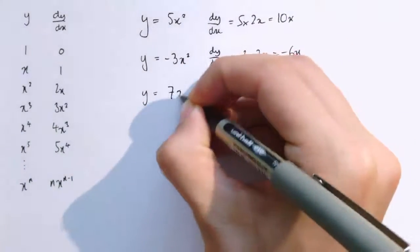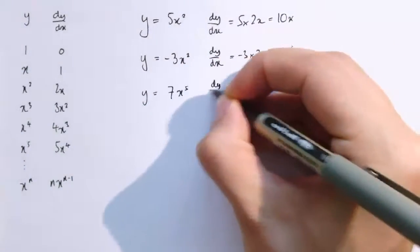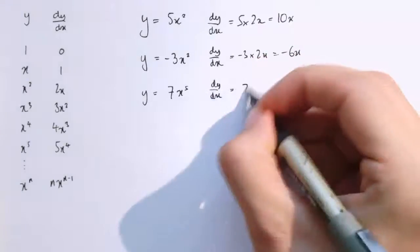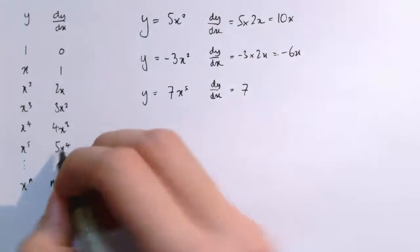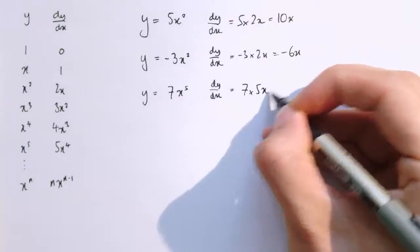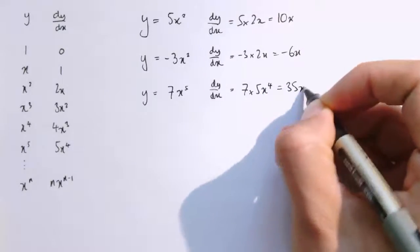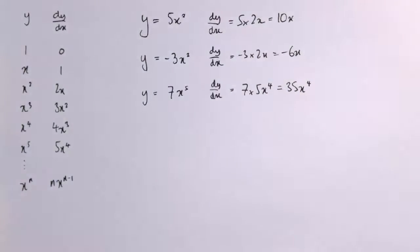So, obviously it works for all these different functions, so let's do one more. y equals 7x to the 5, dy/dx would be 7 times the derivative of x to the 5, so that's 7 times 5x to the 4, which is 35x to the 4.